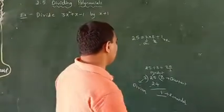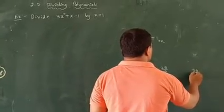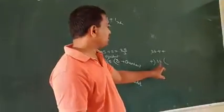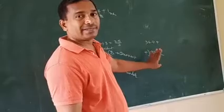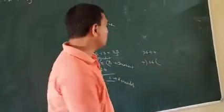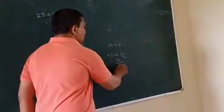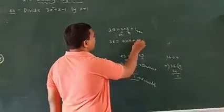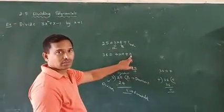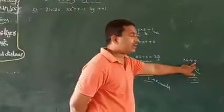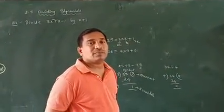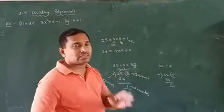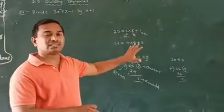Now let us take another problem. For example, 36 divided by 4. So divide 36 by 4. How many times does 4 go into 36? 9 times. 4 nines are 36. What is the remainder here? 0. By writing the result fact, 36 can be written as 4 into 9 plus 0. When the remainder is 0, this 4 is the factor of 36. If you get remainder 0, then the divisor is a factor. We can apply this concept to polynomials.